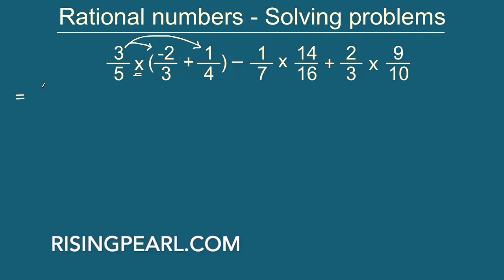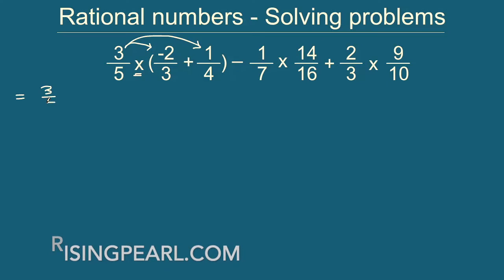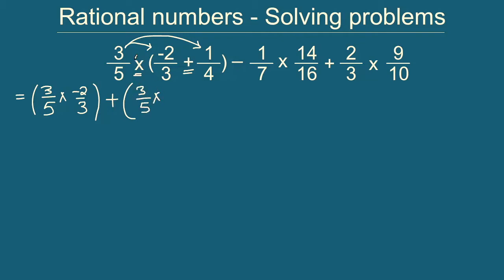This will become equal to 3 by 5, which is this number here, then we will multiply this first by minus 2 by 3. So let's write minus 2 by 3 and put a bracket around it. So this is our first term, which is 3 by 5 times minus 2 by 3. Then we have to write this plus term. So let's write the plus term here and now we have to multiply 3 by 5 times 1 by 4.